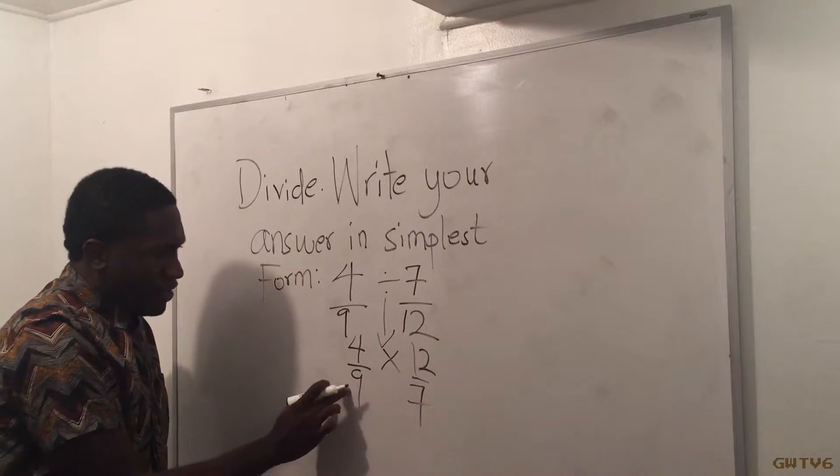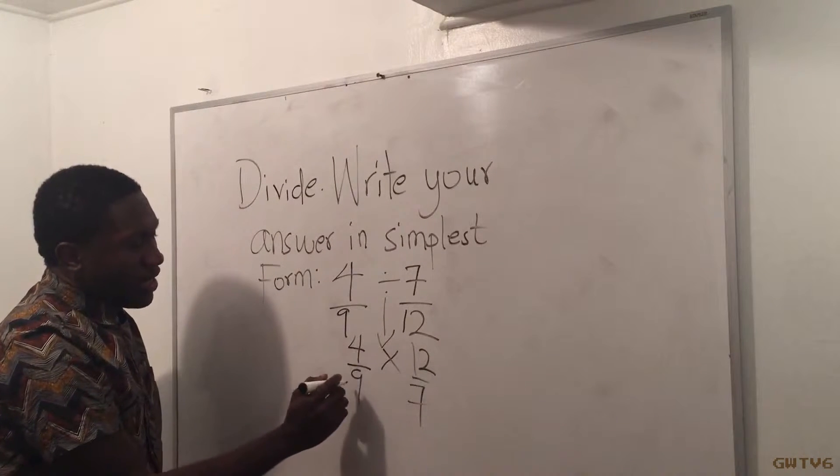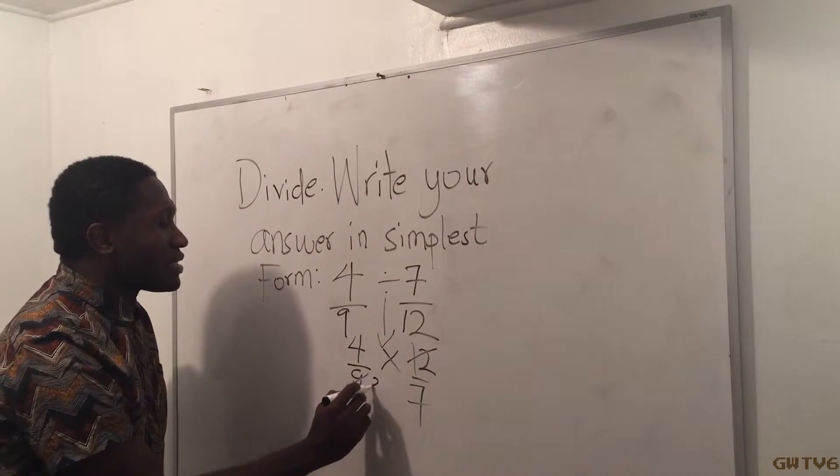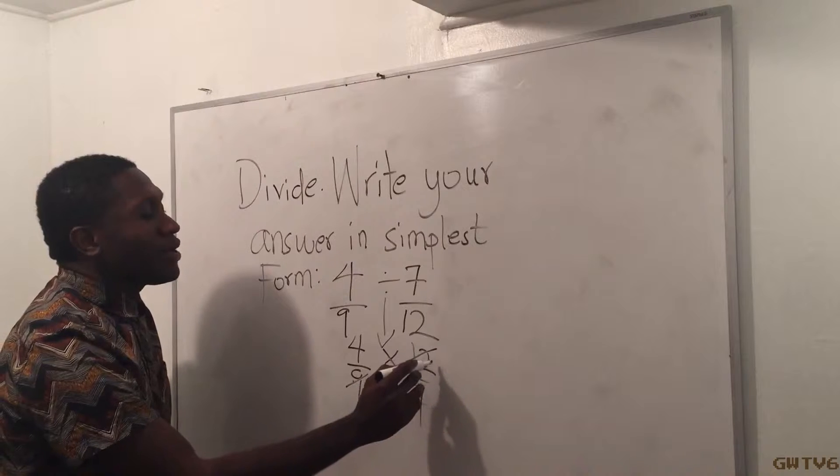So now with these two, I see that 3 can go into that and 3 can go into that, right? So 9 divided by 3 is 3, 12 divided by 3 is 4.